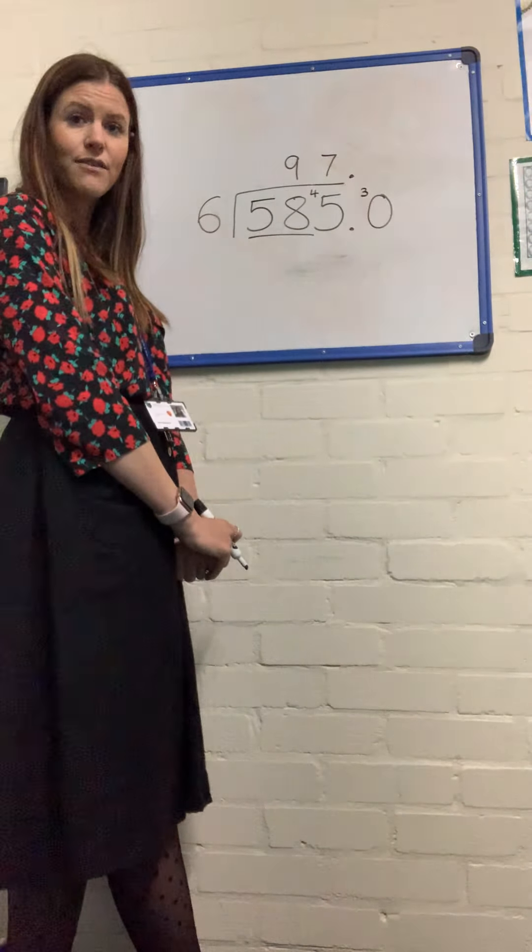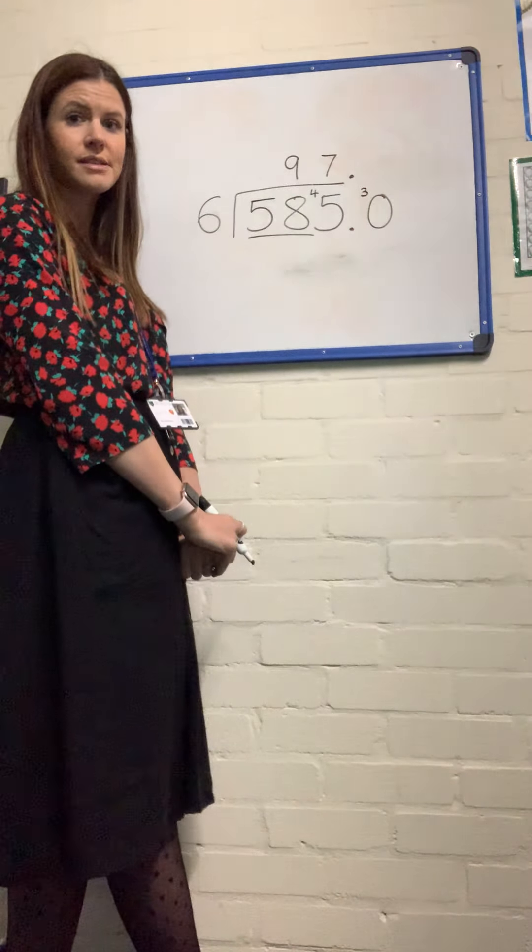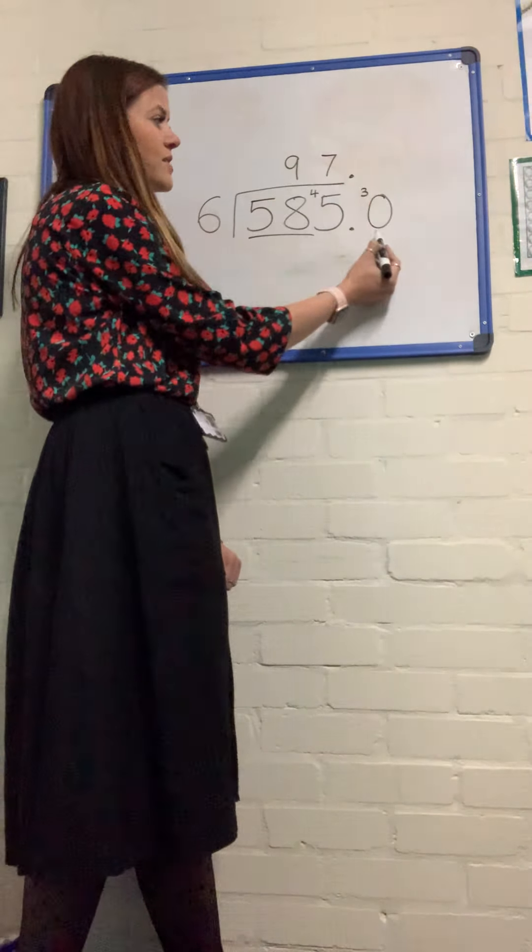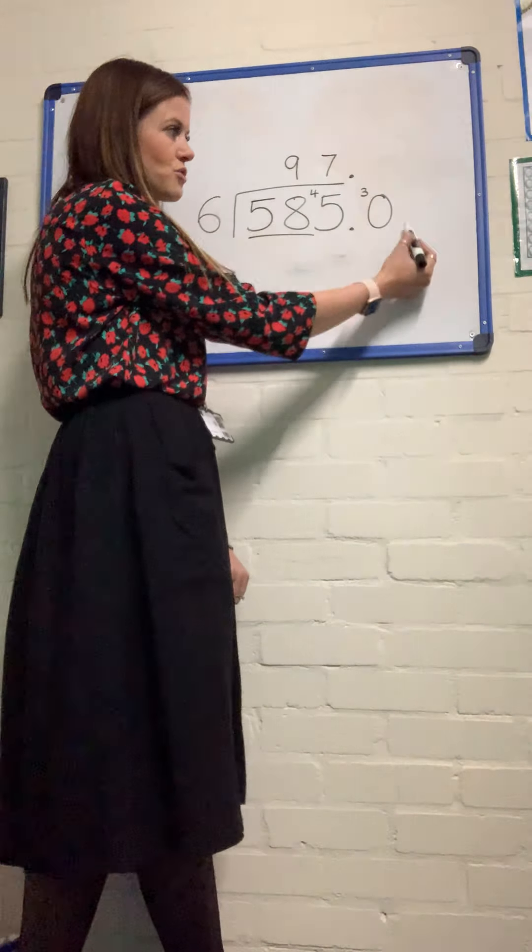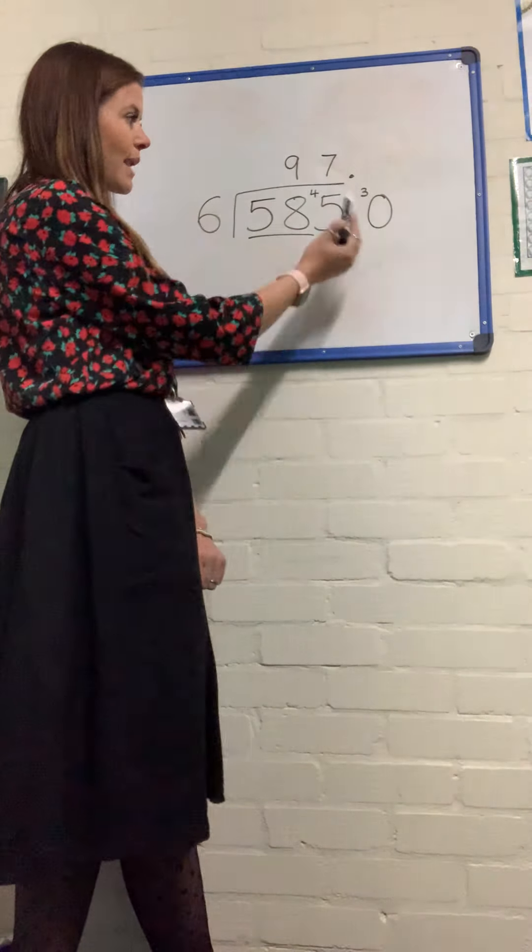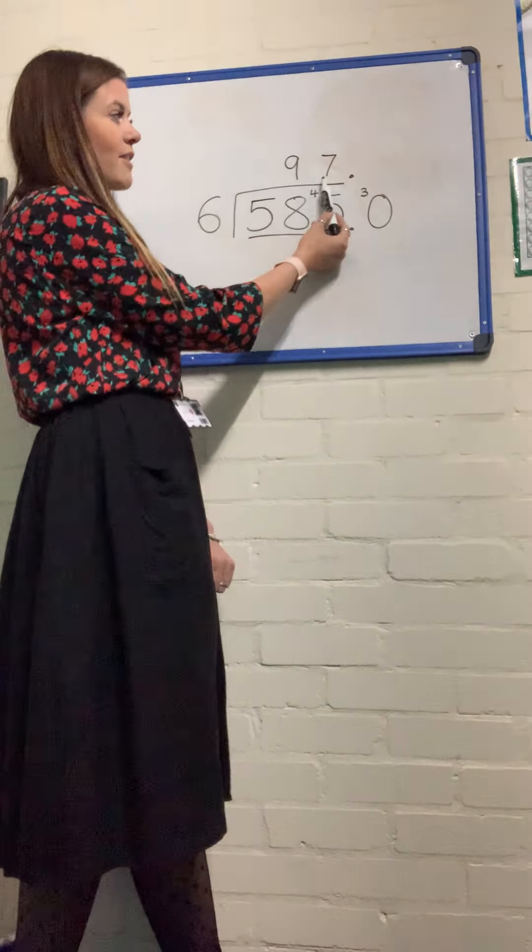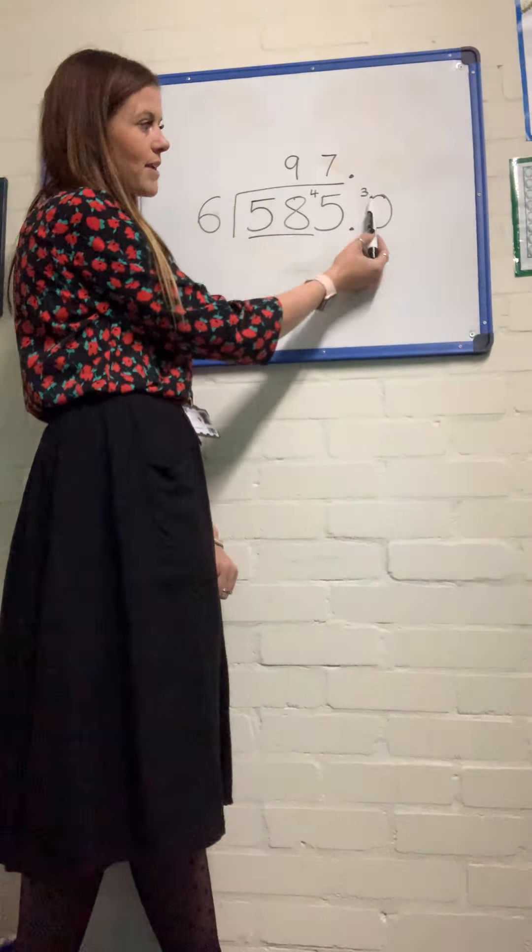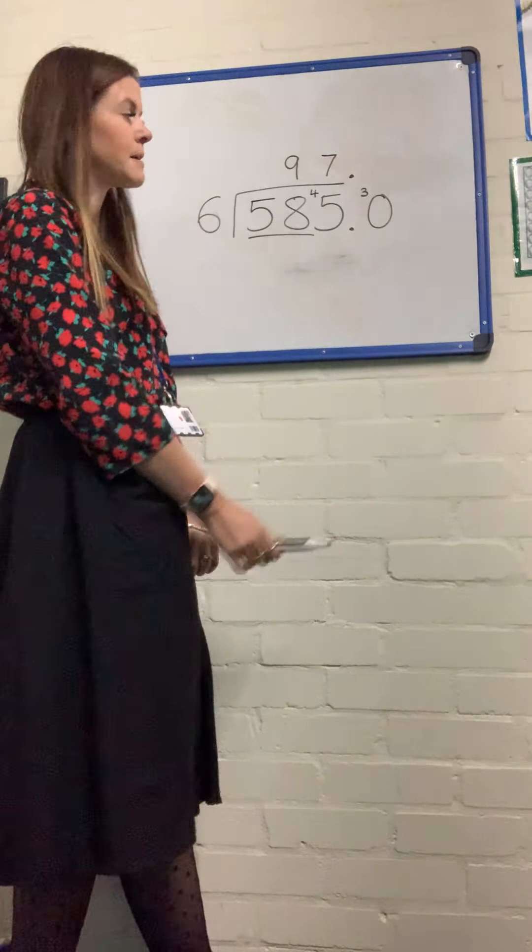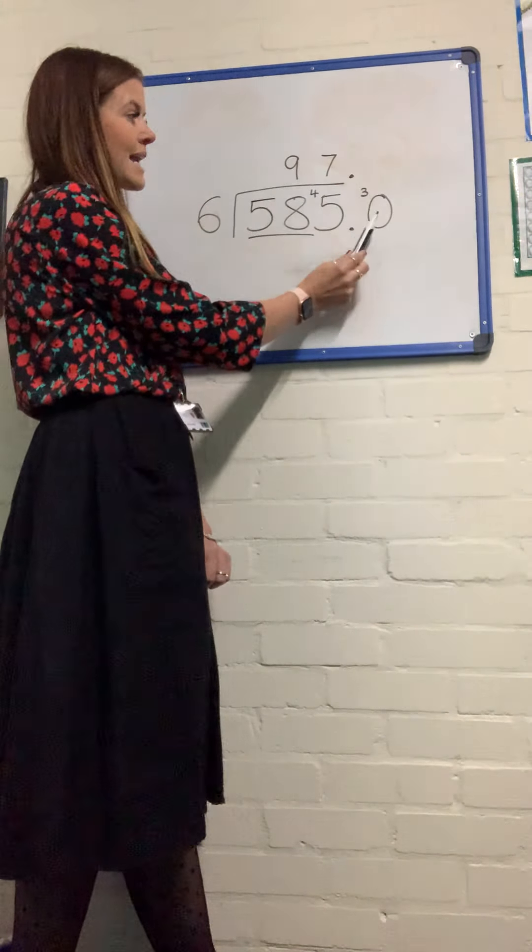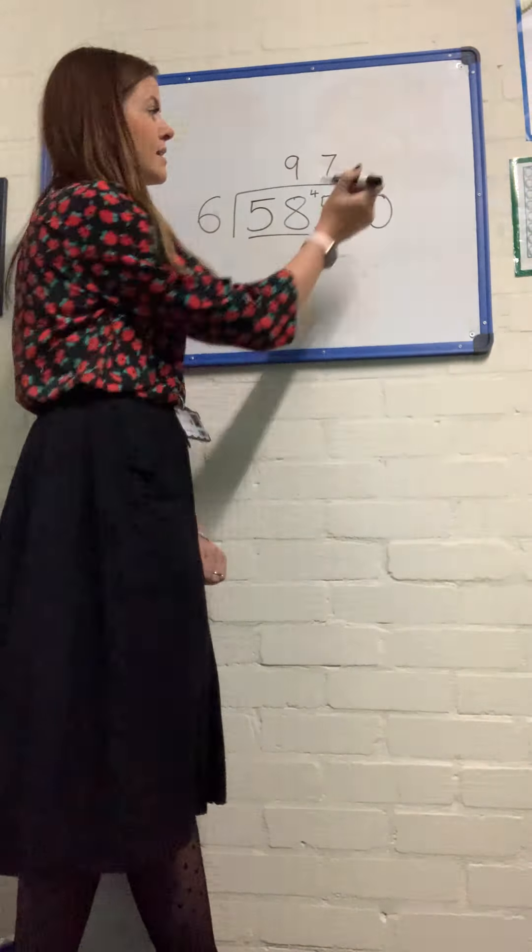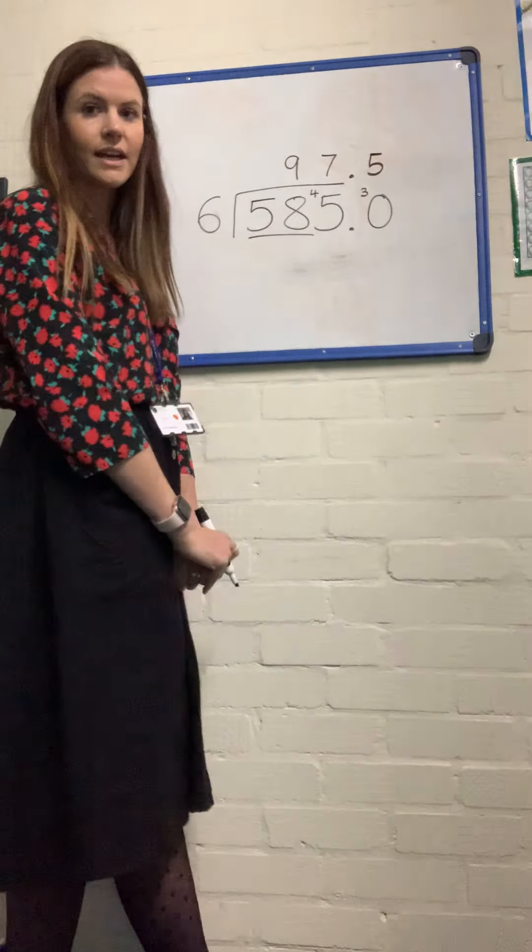And I'm now saying that I've got 30 tenths. 3 tenths, sorry, which gives me 30 tenths in my tenths column. This would be my hundredths and my thousandths. So like here, we would say I've got 45 ones. Well here, 3 and 0, 30 tenths. And I'm saying how many equal groups of 6 tenths can I get from 30 tenths? And I would get 5.